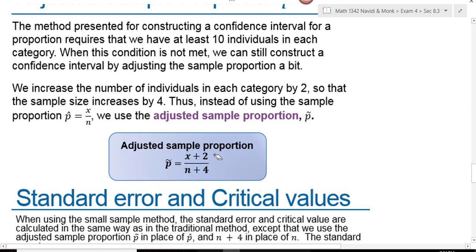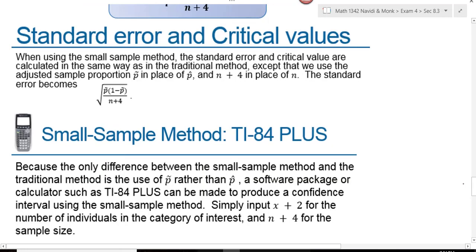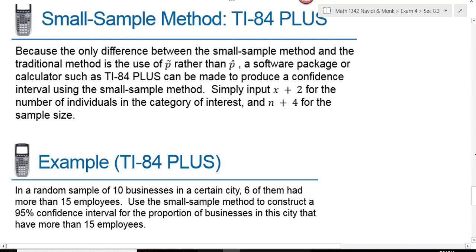It's a P with a tilde on it. The way we get it is we add 2 to our successes and we add 4 to our sample size. When using the small sample method, the standard error and critical values are calculated in the same way, but instead of using P-hat, we use P-tilde. We simply input X plus 2 in place of X and N plus 4 in place of N.